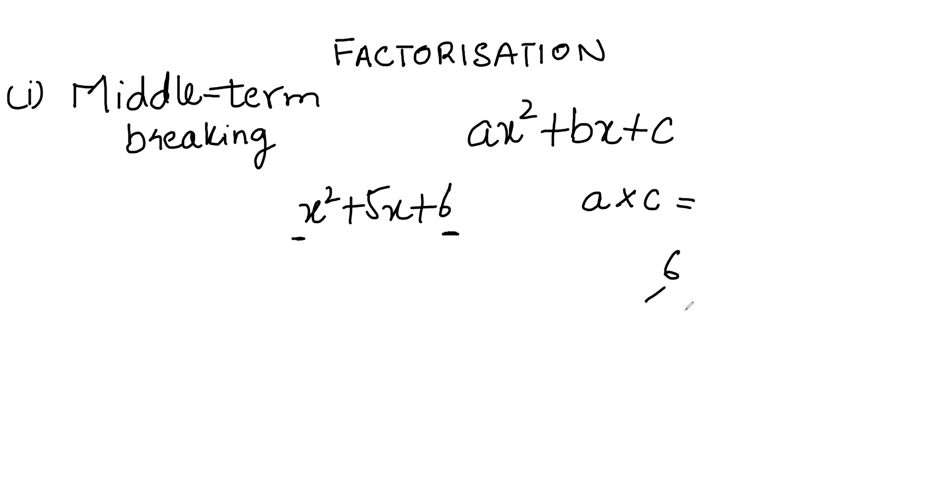The factors in this case will be 1×6, 2×3, 3×2, and 6×1. Now you have to use the factors which add up to b. In this case, you will use those factors which add up to 5.